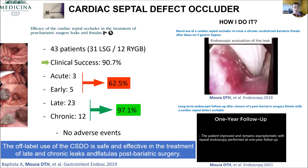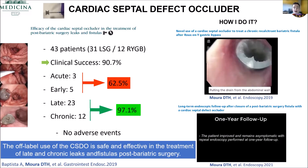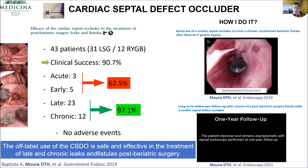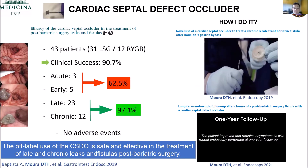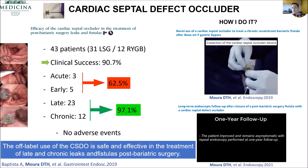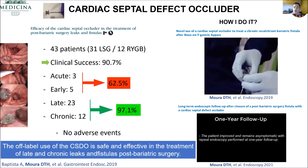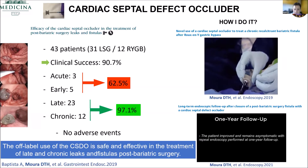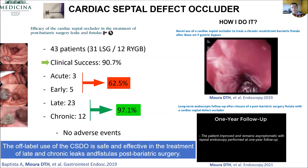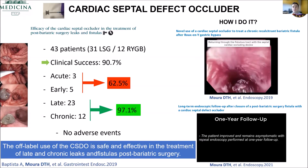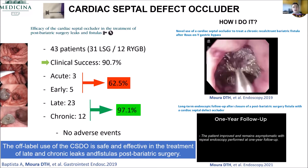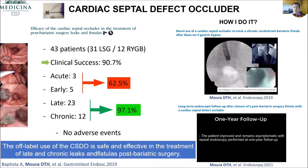Cardiac septal defect occluder — I really like this device. When you have a chronic or late fistula, the efficacy is about 97%. As you can see in this video, you place the stent in the epithelialized tract. It's a very strong stent with a very strong radial force, and it keeps the tract closed for a while.